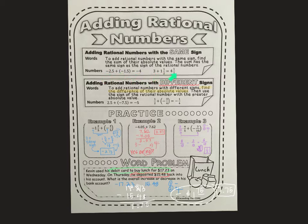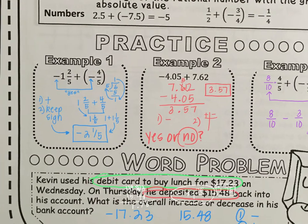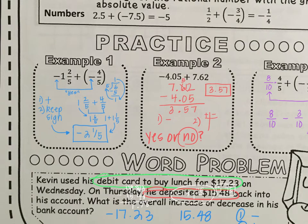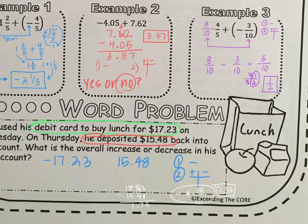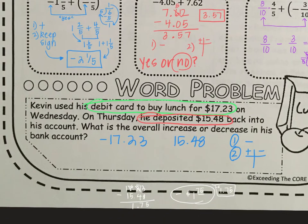So two negatives give you a negative, two positives give you a positive. When they are different signs, this is the same as your no flap, where you subtract them and see who wins. Find the difference of their absolute values, and then whatever sign the greater rational number's absolute value has — that's the "see who wins." Then we did these problems together, and if you don't have those, you can pause the video and add those to your notes. You can zoom in to see what we wrote.